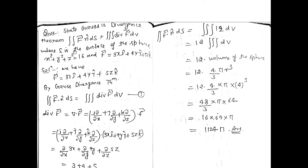By using this theorem, we have to solve this integral. The given surface is x² + y² + z² = 16, which is a sphere having radius 4, and f-vector is given. Now we need to calculate the divergence of f-vector — this is our first step. So we have f-vector, and we will calculate divergence of f-vector.